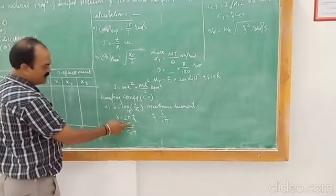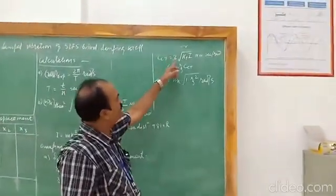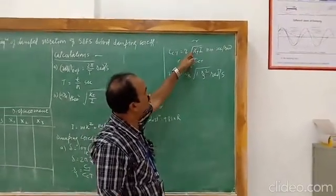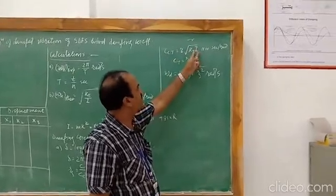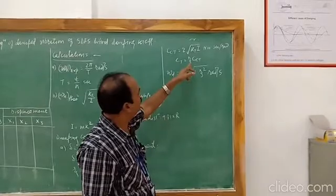Again, the value of zeta is equal to ct upon cct. For cct, we can calculate the critical damping coefficient is equal to 2 times square root of kt times i which we have calculated.